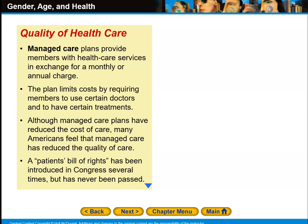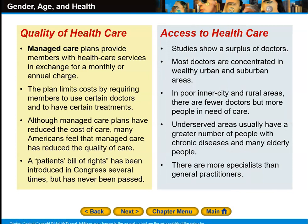Quality of health care: managed care plans provide members with health care services in exchange for a monthly or annual charge. The plan limits cost by requiring members to use certain doctors and to have certain treatments approved. Although managed care plans have reduced the cost of care, many Americans feel that managed care has reduced the quality of care. A patient's bill of rights has been introduced in Congress several times but has never been passed. Access to health care: studies show a surplus of doctors, but most are concentrated in wealthy, urban, and suburban areas. In poor, inner-city, and rural areas, there are fewer doctors but more people in need of care. These underserved areas usually have a greater number of people with chronic diseases and many elderly people. There are more specialists than general practitioners.